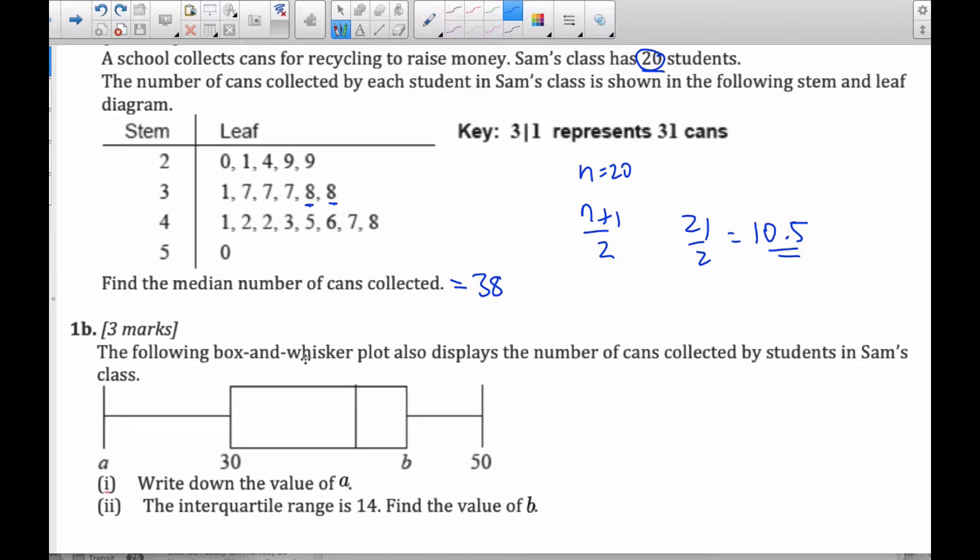Okay, so the following box and whisker plot shows the number of cans collected by Sam's class, write down the value of A. Well, these are connected. The smallest collection of cans is 20 here, so A is 20.